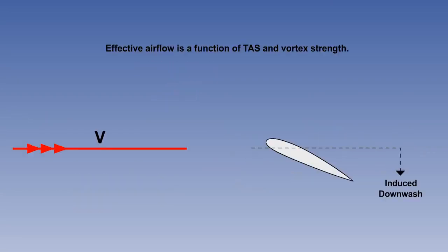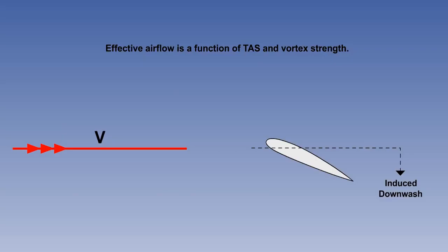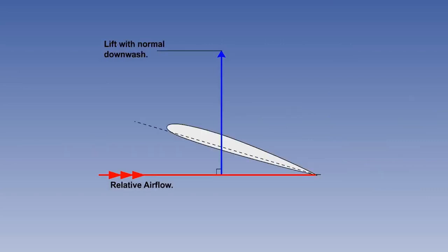Since TAS is also a principal factor in the relative airflow, these two factors combine to determine the change in effective angle of attack. Because of the localised reduction in effective angle of attack, the overall lift generated by a wing is actually less than it would be if there were no spanwise pressure differential. Paradoxically, it is the production of the lift itself that reduces the magnitude of the lift being produced.